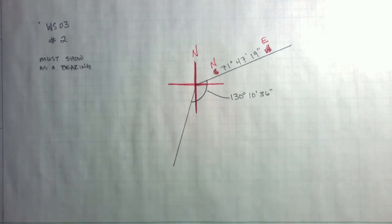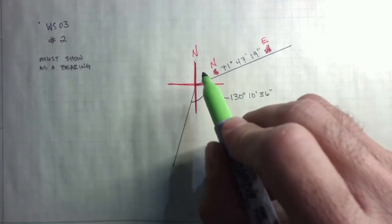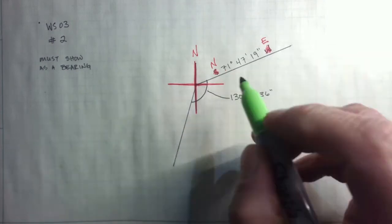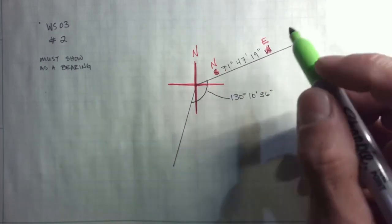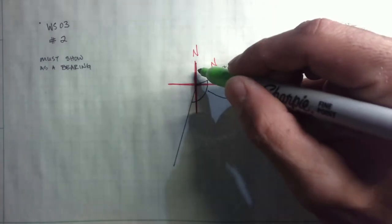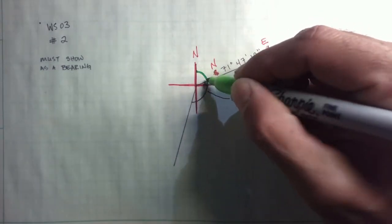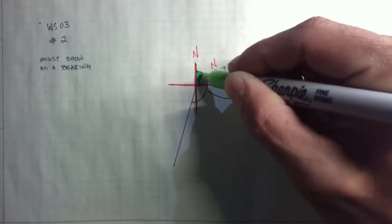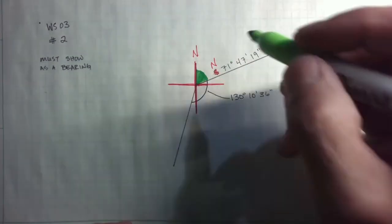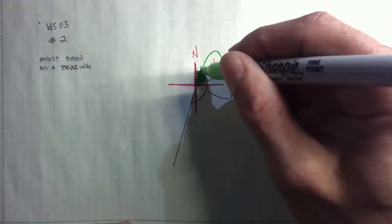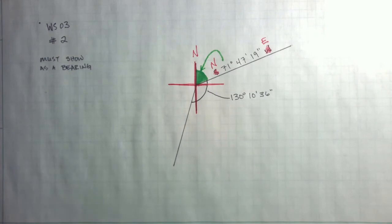And a bearing, remember, is measured from north towards the east. So this 71 degrees, 47 minutes, 19 seconds, that is measuring from north towards the east. And I'm just going to color in this piece of the pie, so we can keep it all nice and tidy.